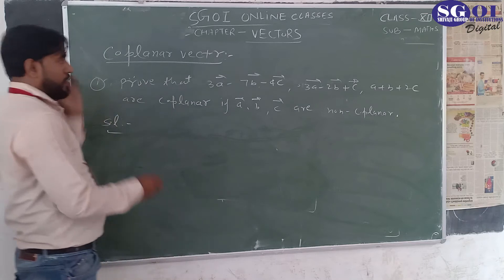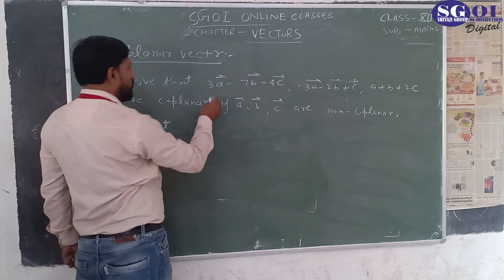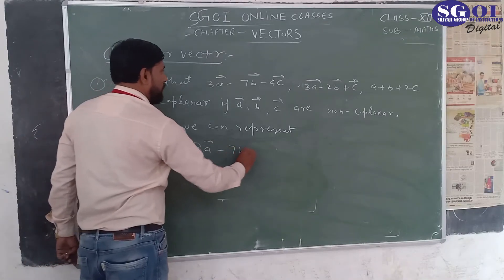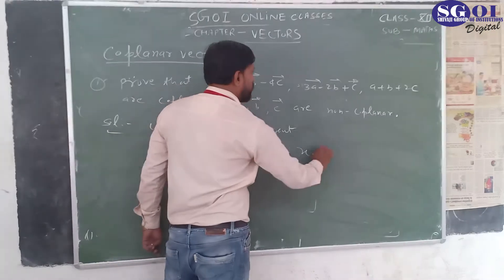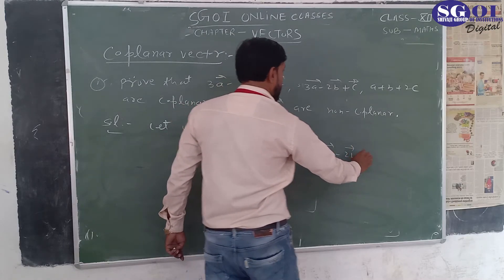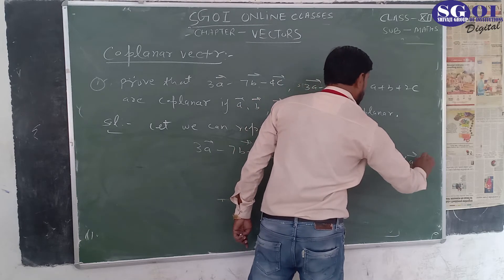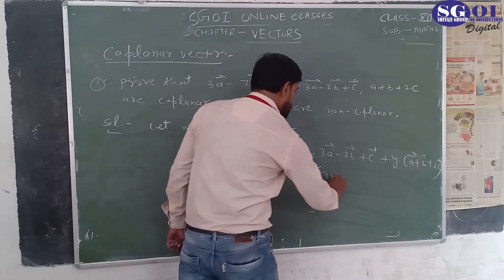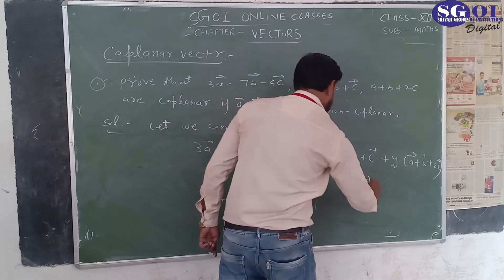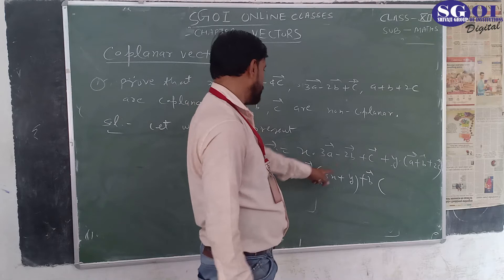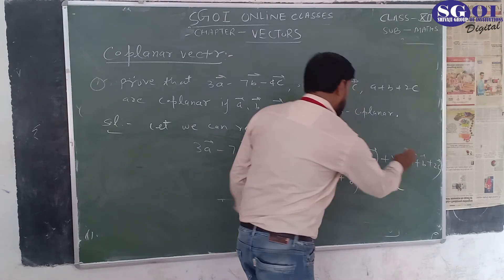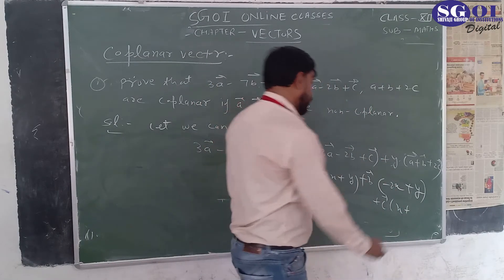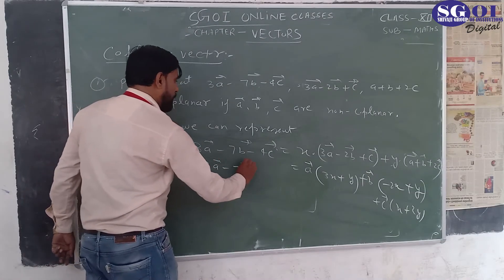Prove that these three vectors are co-planar. We represent: 3A minus B minus 4C equals X times (3A minus 2B plus C) plus Y times (A plus B plus 2C). Expanding, we compare coefficients of vectors A, B, and C on both sides. Here we have 3 vector A, minus 7 vector B, and minus 4 vector C.